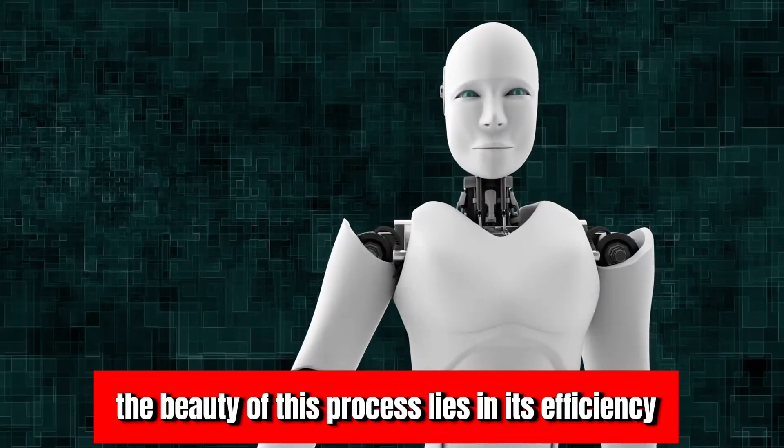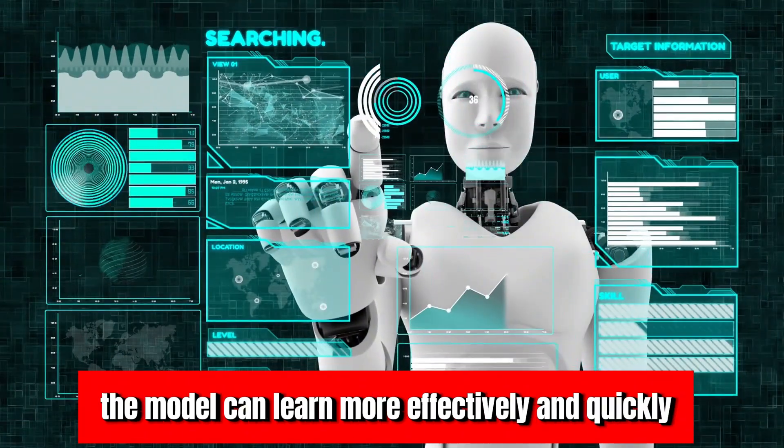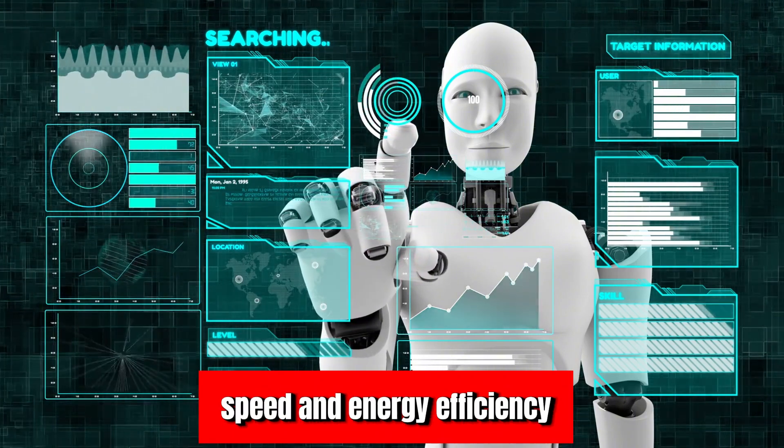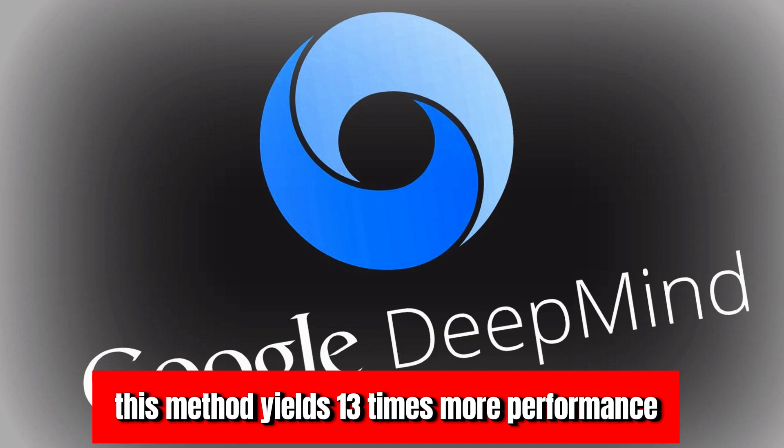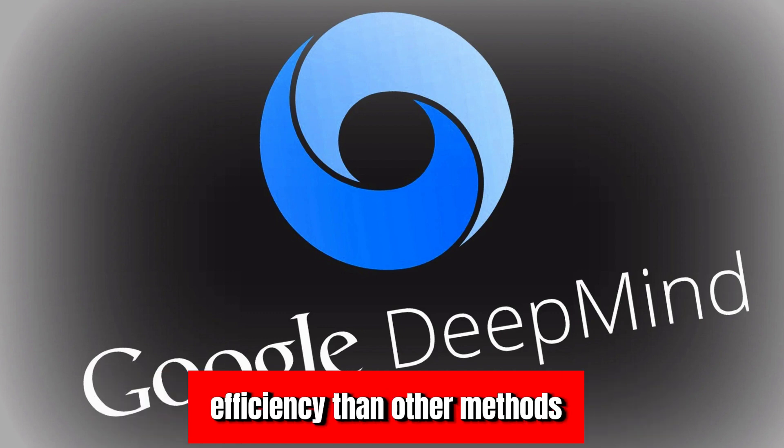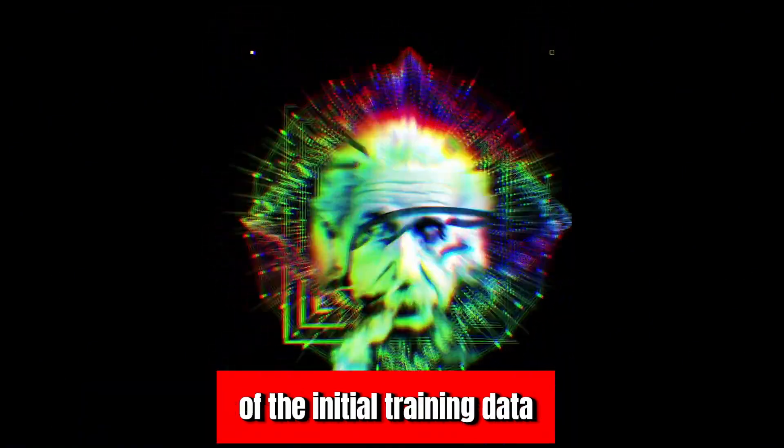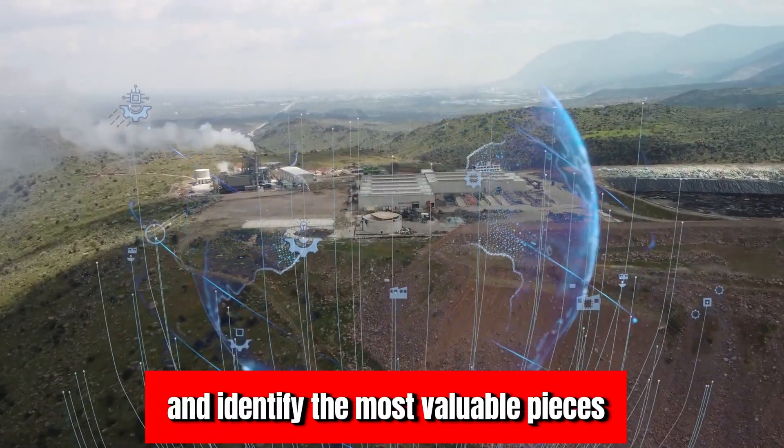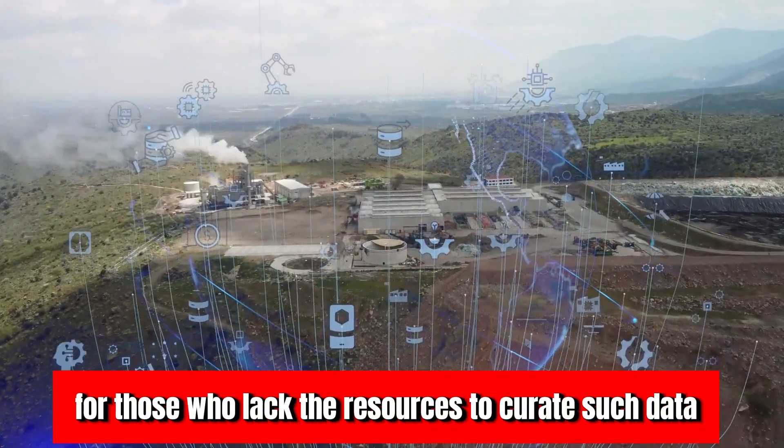The beauty of this process lies in its efficiency. By focusing on the most relevant data, the model can learn more effectively and quickly. This results in a significant acceleration in both training speed and energy efficiency. According to DeepMind, this method yields 13 times more performance and 10 times higher power efficiency than other methods. However, it's important to note that the success of this method hinges on the quality of the initial training data. The smaller model needs high-quality data to grade and identify the most valuable pieces for training. This requirement may pose challenges for those who lack the resources to curate such data.